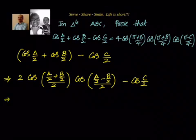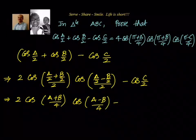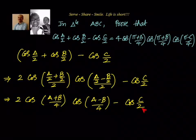Simplifying, we get 2 cos((A+B)/4) · cos((A−B)/4) minus cos C/2. Now we have a problem: we have (A+B)/4 and (A−B)/4, but the last term is C/2.